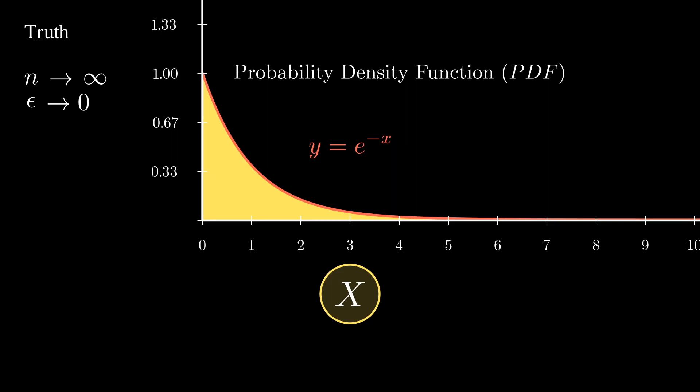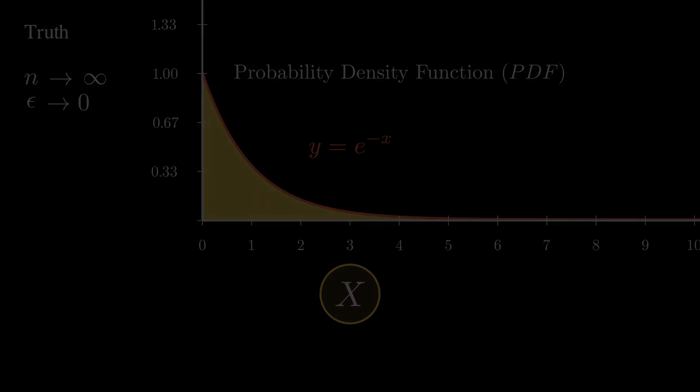It is only in the limiting case, also called asymptotic case, that we can characterize a random variable. This is one of the fundamental interpretations of probability. Repetition allows to discover the truth of a random variable. Or in other words, probability is the limiting case of frequency.